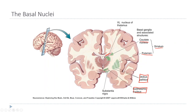The other important part of the basal nuclei is the substantia nigra, which is definitely part of the midbrain. So all four structures together — the striatum, the globus pallidus, the subthalamic nucleus, and the substantia nigra — make up the basal nuclei.